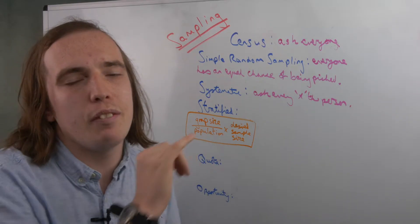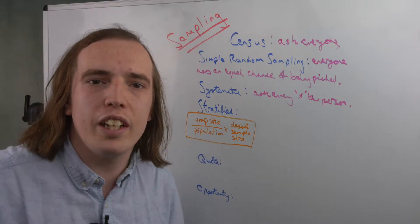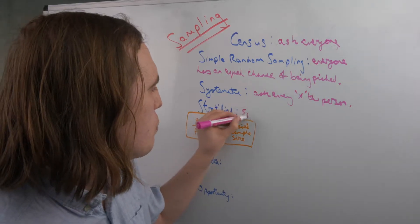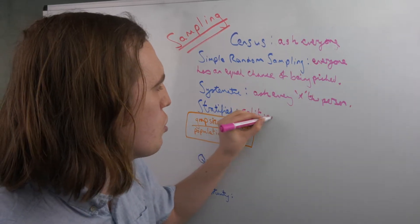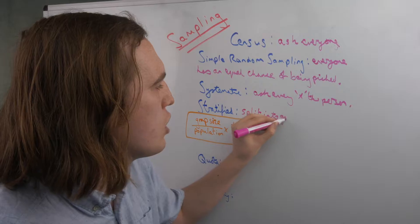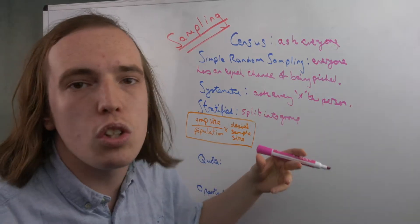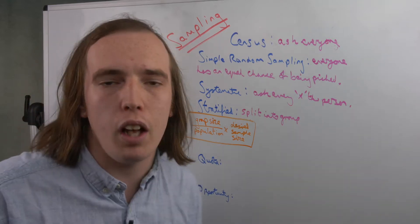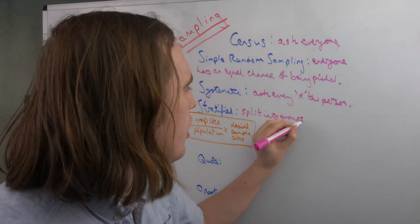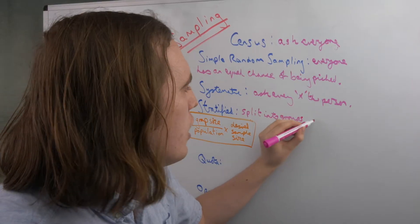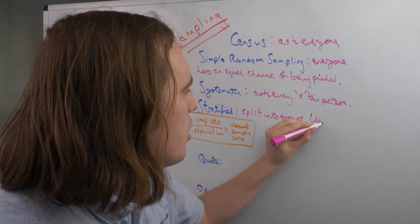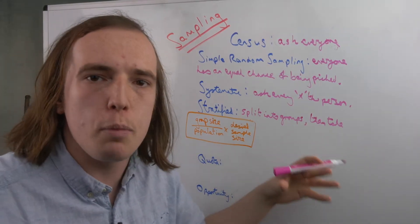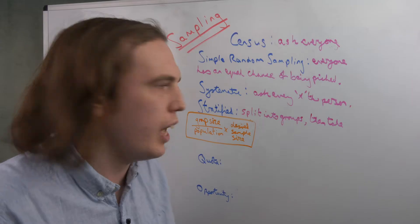Stratified is the first one, really the main one, we're actually now going to have to bring in an equation. For stratified, we're first going to split the population into groups. So this could be groups based on age or gender or class or subculture, or any way that you can divide people up. And then what you're going to do is you're going to take a certain amount of people from each of those groups to make a sample size, a sample selection.